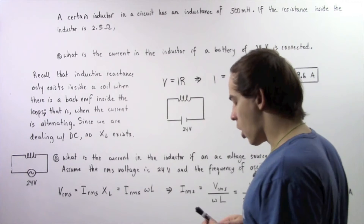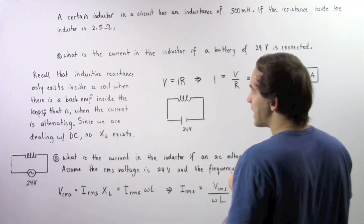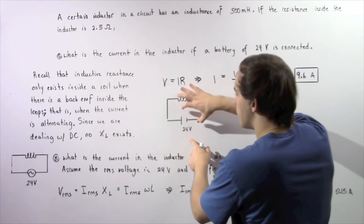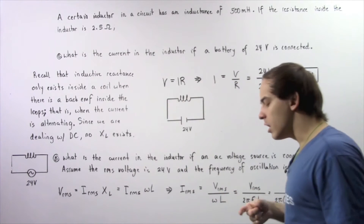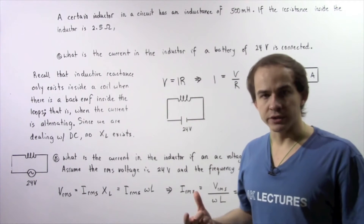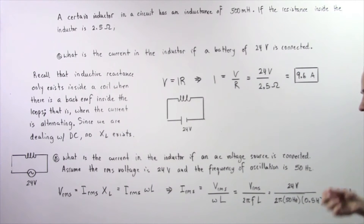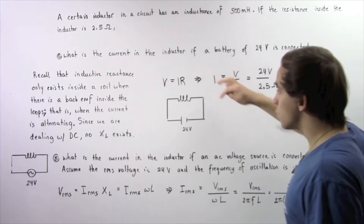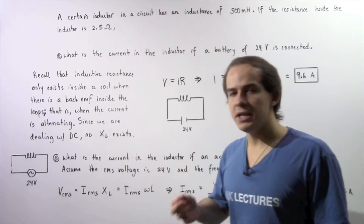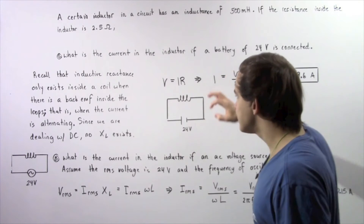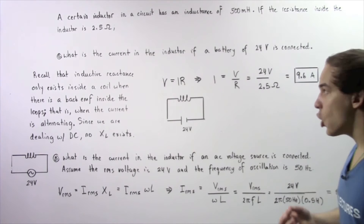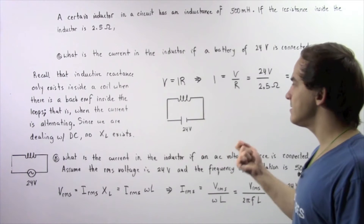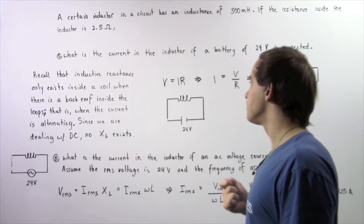So let's begin with part A. We essentially have an inductor that has a resistance of 2.5 ohms, and we place it into an electric circuit that contains a battery of 24 volts. Now recall a battery produces a direct current — a current that does not change over time, a current that remains constant. Because the current traveling through the loops of our inductor is constant, there will be no back EMF induced, and therefore no inductive reactance inside the loops of our inductor in part A.